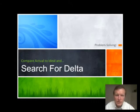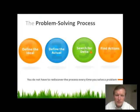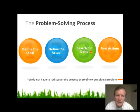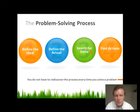So let's see how this works. There are four steps in the problem-solving process. First, we define the ideal. In the programming world, the ideal is the requirements. But in other problems, when we're dealing with other types of situations, it's just a mental picture of how we want something to be.